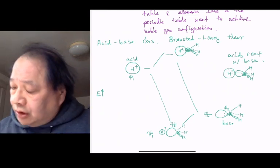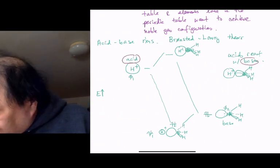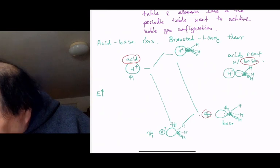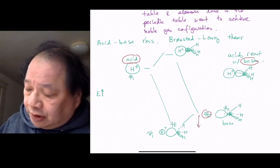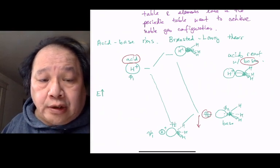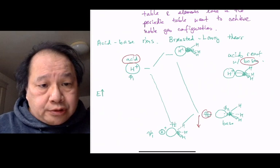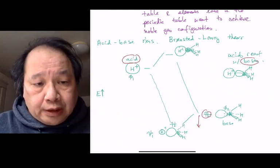And the crux about why the acid reacts with the base is that the pair of electrons has gone down in energy. Psi 1 has gone down. There are no electrons in psi 2, it doesn't matter. So again, just like in redox, it is the electrons which control acid-base reactions.